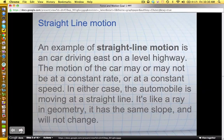An example of straight line motion is a car driving east on a level highway. Notice that the car is moving and there's a direction, east, on that level highway. The motion of the car may or may not be at a constant rate. It may speed up, may slow down. In either case the automobile is moving in a straight line. It's like a ray in geometry. It has the same slope and will not ever change.